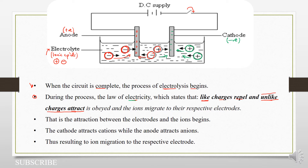So that is the attraction between the electrodes and the ions. So our electrodes: at least we have seen that we have the anode and then we have the cathode. These are the two electrodes that we have.